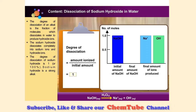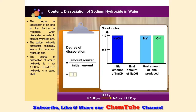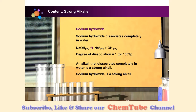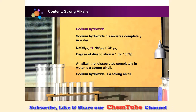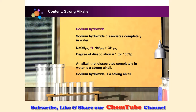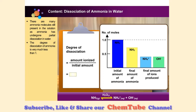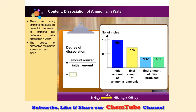We can therefore say that sodium hydroxide is a strong alkali. An alkali that dissociates completely in water is called a strong alkali. Sodium hydroxide is, therefore, a strong alkali. The amount of ions produced is very much less than the amount of ammonia molecules added.